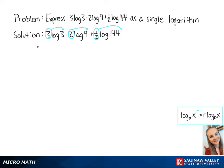So we can rewrite this as the log of 3 cubed minus the log of 9 squared plus the log of 144 to the 1 half power.